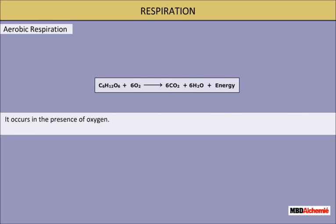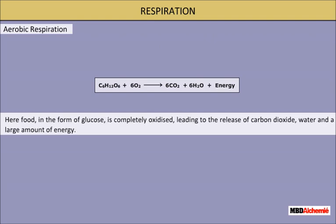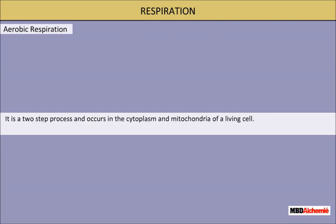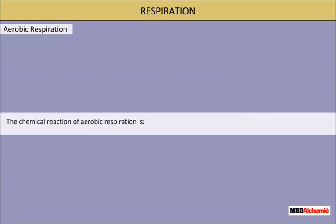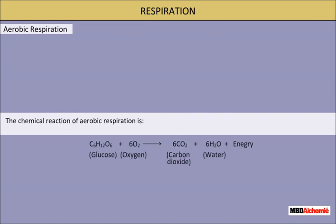Aerobic respiration occurs in the presence of oxygen. It is carried out in the bodies of almost all living organisms. Here, food in the form of glucose is completely oxidized, leading to the release of carbon dioxide, water, and a large amount of energy. It is a two-step process and occurs in the cytoplasm and mitochondria of a living cell. The chemical reaction is: glucose + oxygen → carbon dioxide + water + energy.